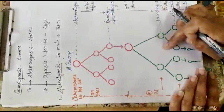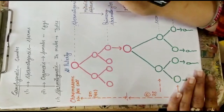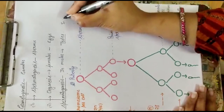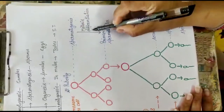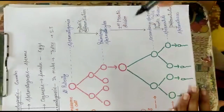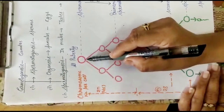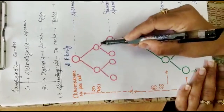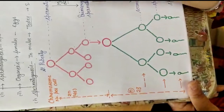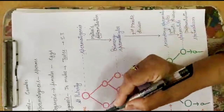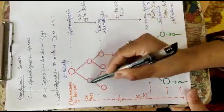In the testis there are the seminiferous tubules where spermatogenesis occurs. Spermatogonia are the male germ cells present in the inner lining of the seminiferous tubule. At puberty, the spermatogonia undergo mitosis and repeatedly divide, increasing their number. As you can see in the diagram, one spermatogonium divides by mitosis to form two, two form four, and so on.